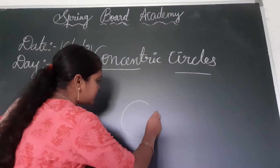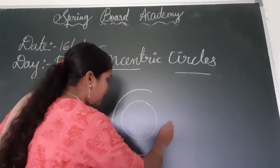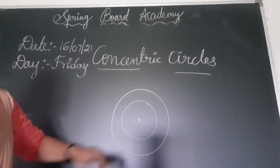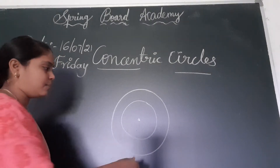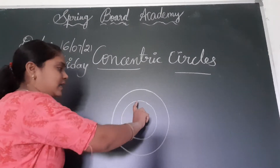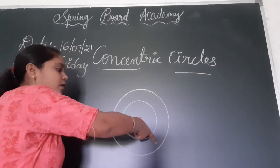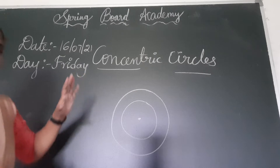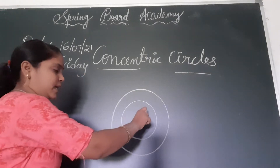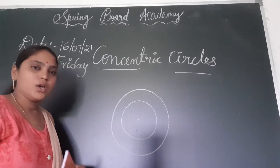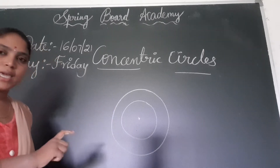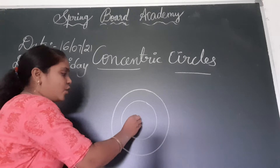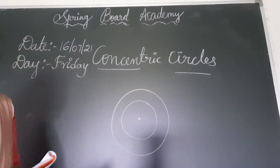For example, this is one circle and this is another circle, but the center of both circles is the same. First I place the compass at this point, draw the first circle, then change the length and draw another circle. You have to take the compass, place it on the paper, draw a smaller circle, then place the metal tip at the same point, increase the length, and draw one more circle. Now we can see that the center of the two circles is the same.